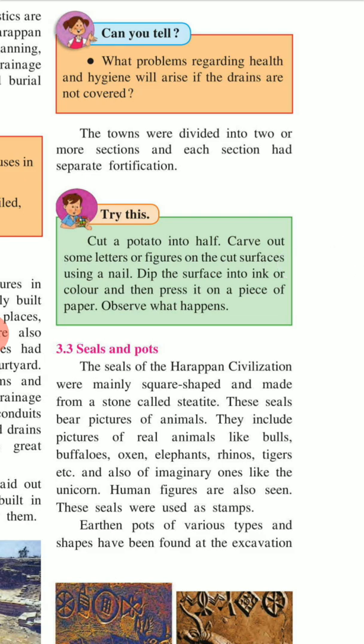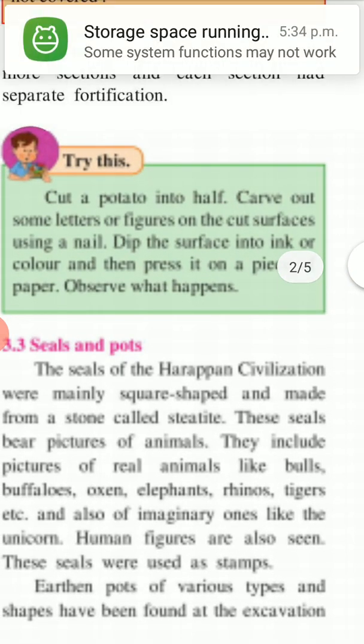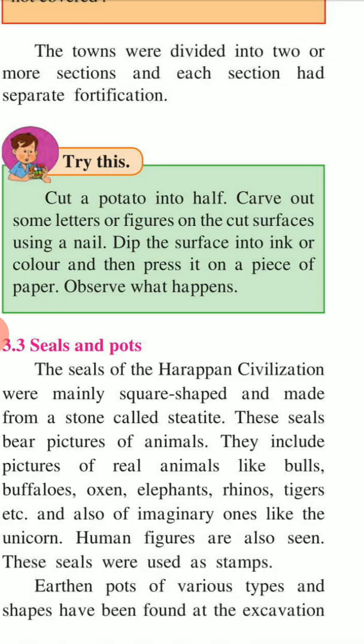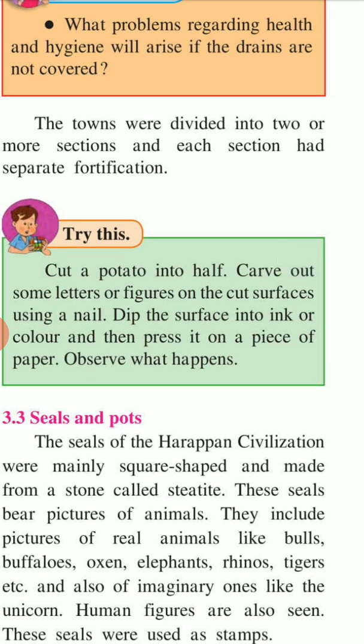Can you tell what problems regarding health and hygiene will arise if the drains were not covered? The towns were divided into two or more sections, and each section had separate fortifications. Try this activity: cut a potato into half, carve out some letters or figures on the cut surface using a nail, dip the surface into ink or color, and then press it on a piece of paper. Observe what happens.